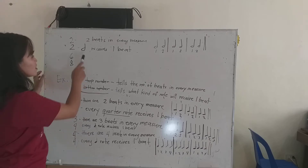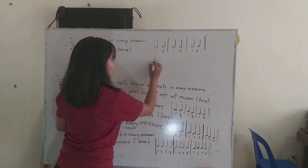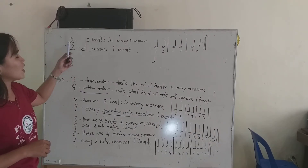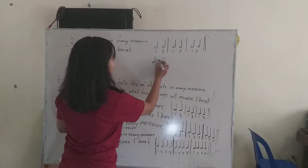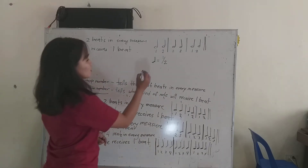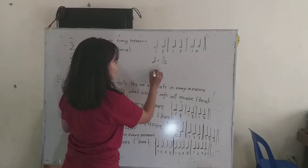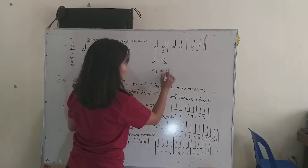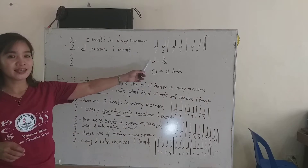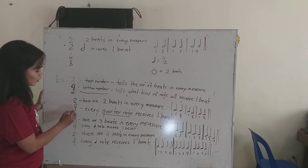Kung ang half note sa 2/2 ay 1 beat, ilan beat na ngayon ang quarter note? Sa 2/2, ang half note ay 1 beat, kaya ang quarter note ay magiging 1 half beat na siya, kasi ang palahati ng half note ay quarter note. At ang whole note natin, kung ang half note ay 1 beat, ano ngayon ang mag-re-receive ng 2 beats? Whole note — 2 beats. Nagbago na yung value ng note natin, hindi katulad dun sa regular na time signature. Na basta 4 yung nasa baba, automatic yung quarter note ay 1 beat.